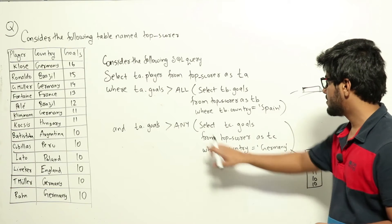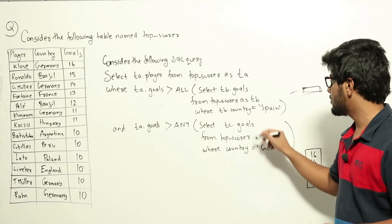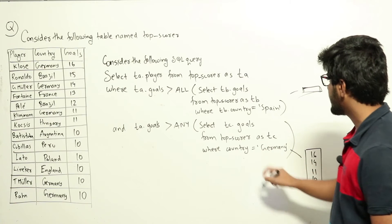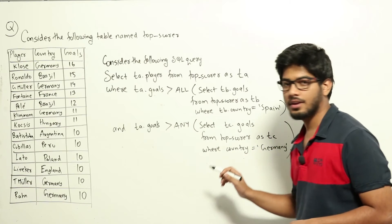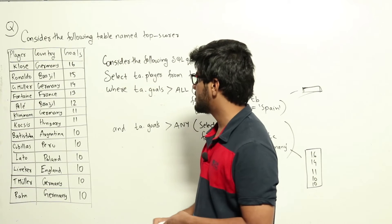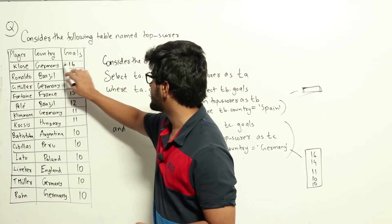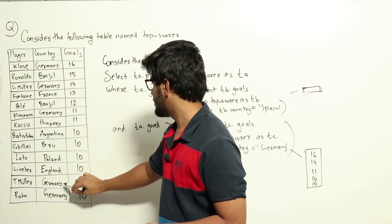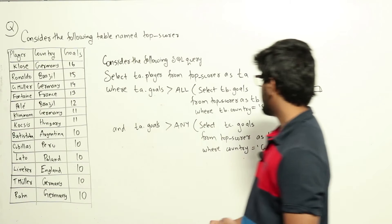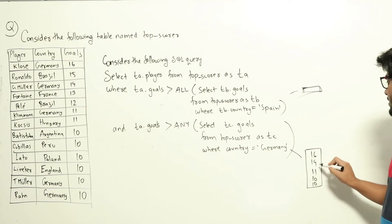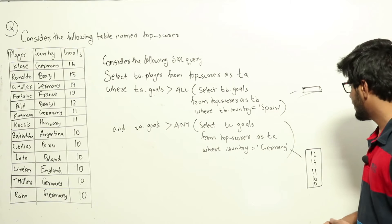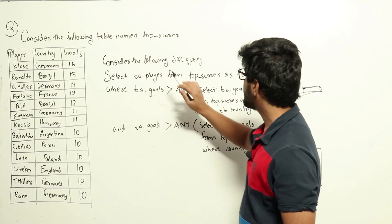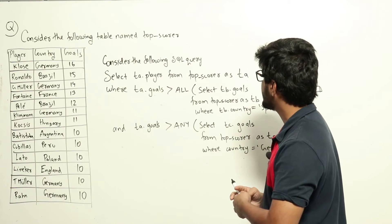Now let's look at this subquery: SELECT tc.goals FROM topscorer AS tc WHERE country = 'Germany'. This returns the goals of players from Germany. Looking at the table, the Germany entries are 16, 14, 11, 10, and 10. So this subquery returns the set {16, 14, 11, 10, 10}.